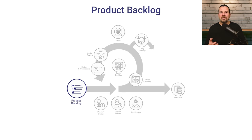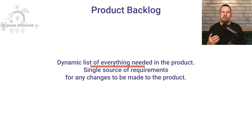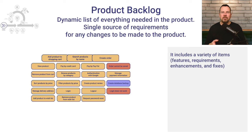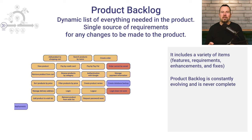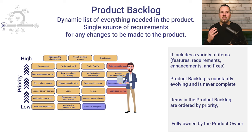The product backlog is the first artifact created in Scrum. It is a dynamic list of everything that might be needed in the product and is the single source of requirements for any changes to be made to the product. It includes features, requirements, enhancements, and bugs that need to be addressed. The product backlog is constantly evolving and never complete. Items are ordered by priority, with the most important items at the top ready to be worked on in the next sprint. The product backlog is fully owned and managed by the product owner.